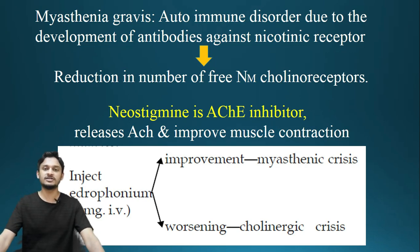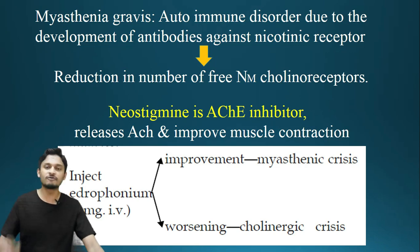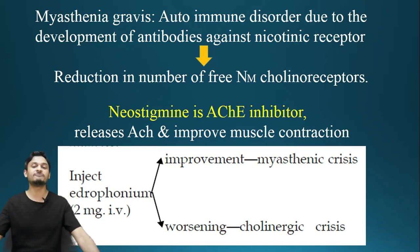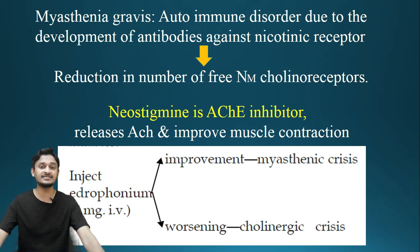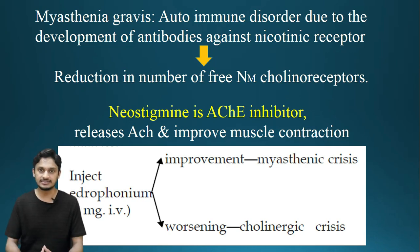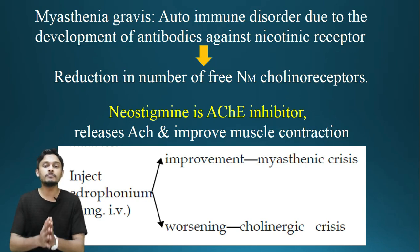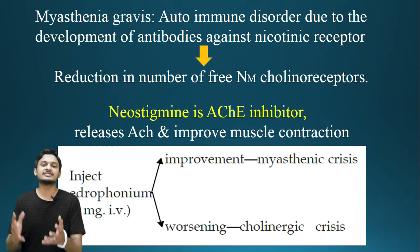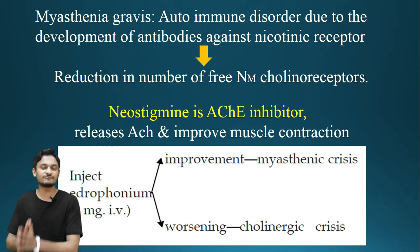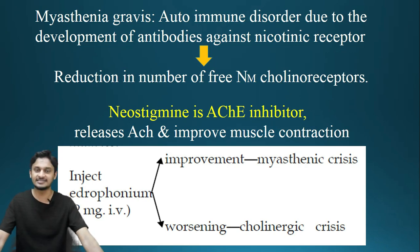Another important point regarding Myasthenia Gravis is the Edrophonium test. The Edrophonium test is used to differentiate between Myasthenia Gravis and cholinergic crisis, as both disorders have almost the same symptoms, like weakness of muscles. When Edrophonium is injected, if there is improvement, that is Myasthenia Gravis; if there is worsening of the condition, that is cholinergic crisis.